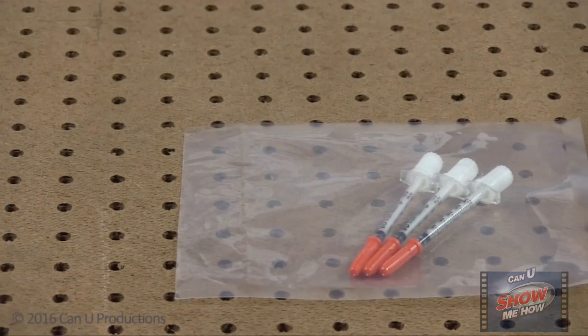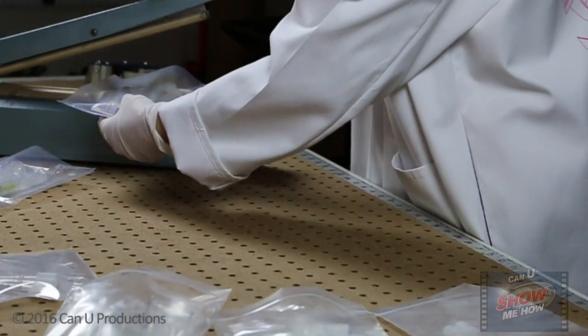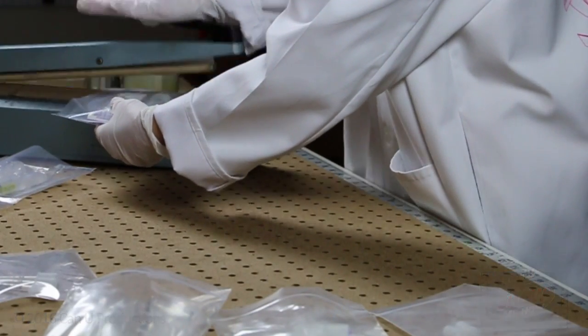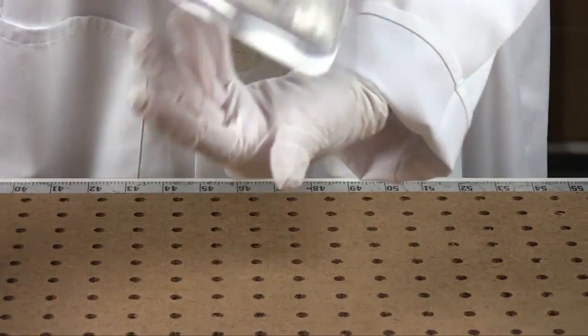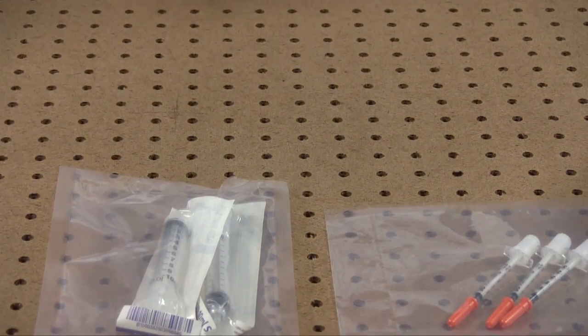There are other high-end sealers with longer heat and dwell timers which can effectively seal different types of barrier bags including poly bags, laminated foil barrier, vacuum pouches, cellophane bags, and up to heavier thicknesses.